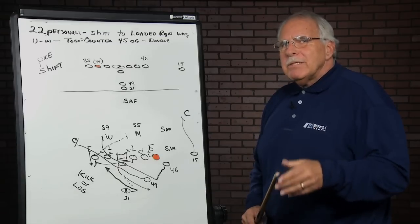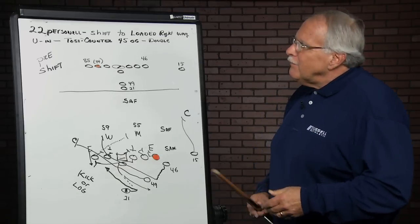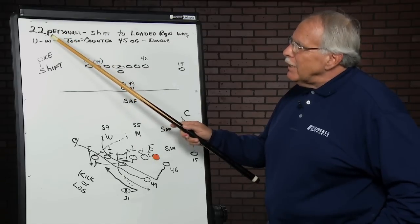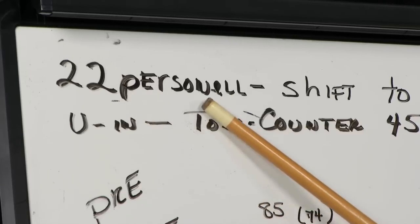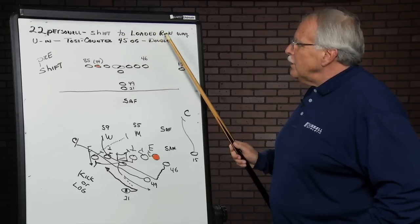Well, the Niners use it, but they use it with some wrinkles. So if you look at this play, if you listen in the huddle, the play is going to sound something like this: 22 personnel, meaning two tight ends, two backs, shift to loaded right wing.